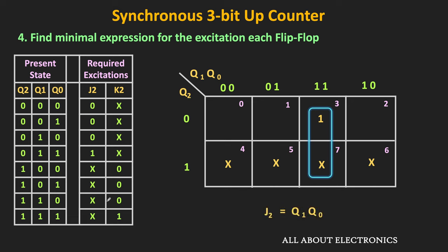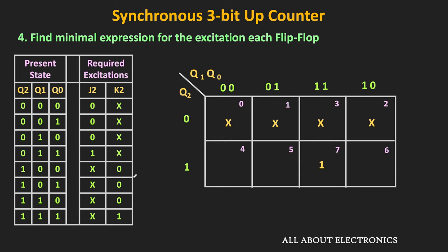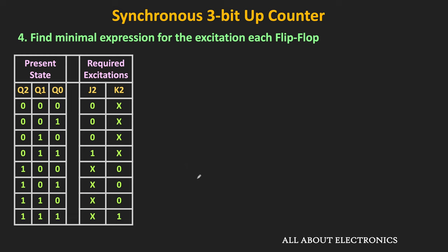Similarly, for K2, it is equal to 1 for only one input combination — that is 1,1,1 — while four input combinations are don't-care terms. Mapping these minterms in the K-map, we combine minterm M7 with the don't-care term, and once again this group corresponds to Q1·Q0. So the minimal expression of K2 is also Q1·Q0. That means both J2 and K2 = Q1·Q0.